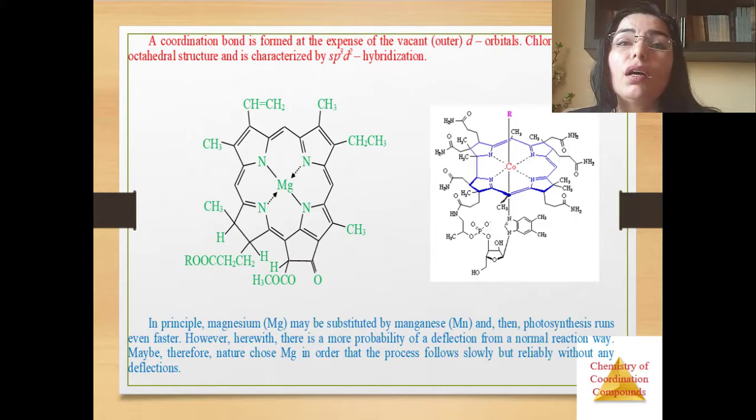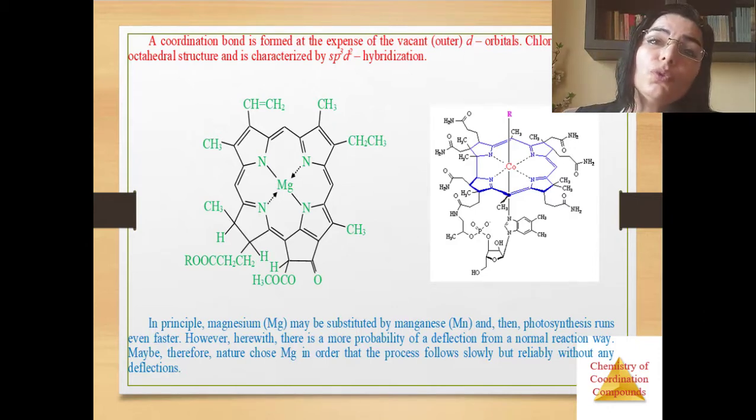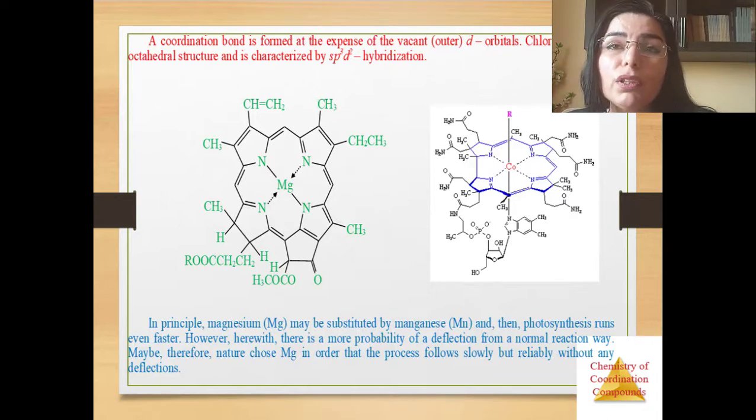A complete structure of B12 has been established by Dorothy Crowfoot Hodgkin, England, Nobel Prize in 1964, the third woman after Marie and Irene Curie. It was synthesized by Woodward, Nobel Prize in 1965. To this effect it took 12 years and synthesis of B12 is considered as an outstanding achievement in history of organic synthesis. A human receives B12 by ingested food. In pharmaceutical industry it is obtained by biosynthesis.